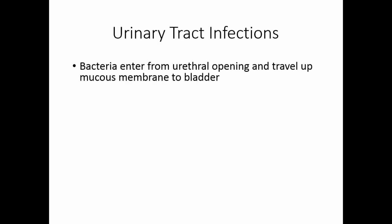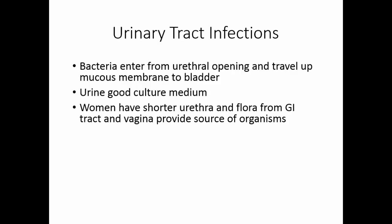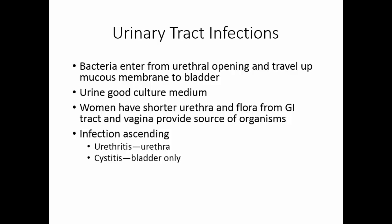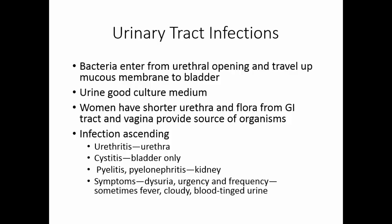Urinary tract infections occur when bacteria enter from the urethral opening and travel up the mucous membrane to the bladder. Urine is an excellent culture medium — it's wet, warm, and has lots of food in it; bacteria thrive there. Women have a shorter urethra and flora from the gastrointestinal tract and vagina provide a source of microorganisms. Urinary tract infections are ascending infections — they start with urethritis (just the urethra inflamed), then cystitis if it's the bladder, and pyelitis or pyelonephritis if the kidney becomes involved. Symptoms include dysuria or painful urination, urgency, and frequency.